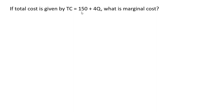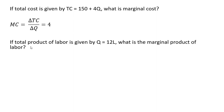A few applications: if total cost is given by 150 plus 4q, marginal cost is just the slope — the b parameter — which is 4. Every time we produce one more unit of output, total cost increases by $4. If the total product of labor is given by q equals 12l, the marginal product of labor is 12 — every time we hire one more worker, output goes up by 12 units.